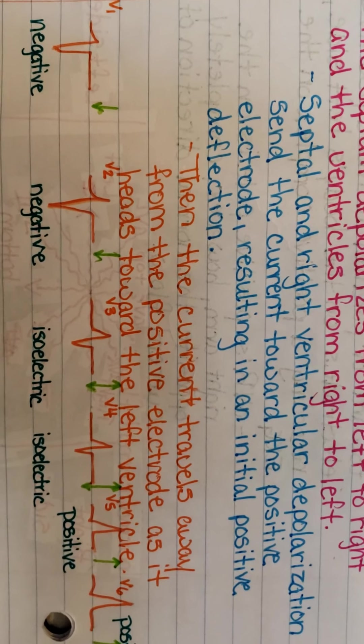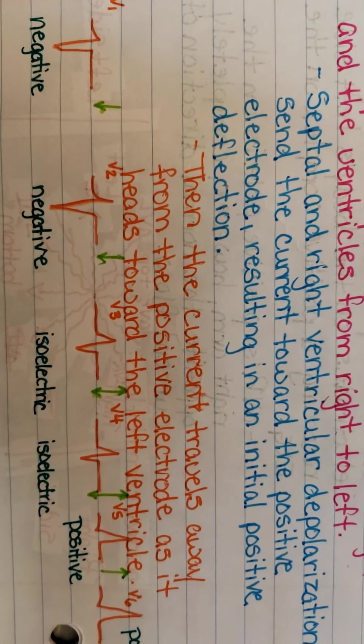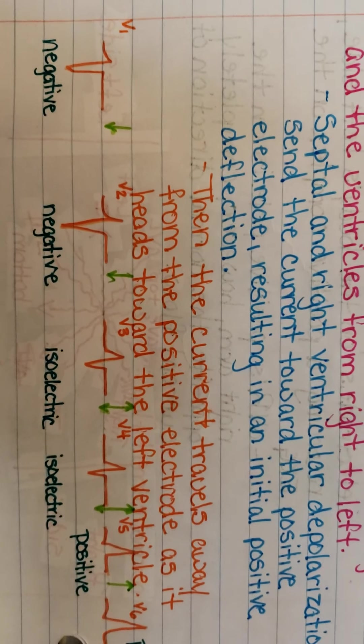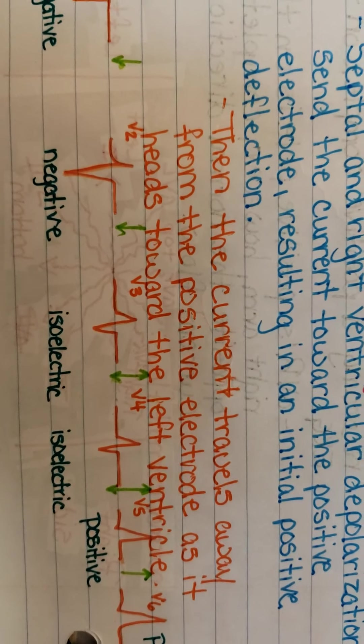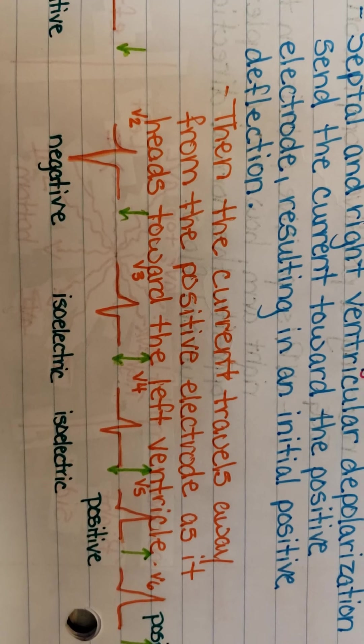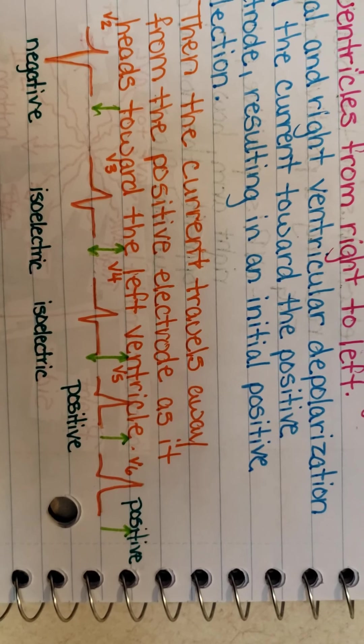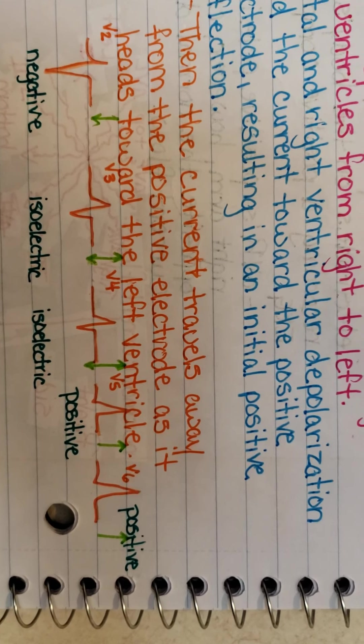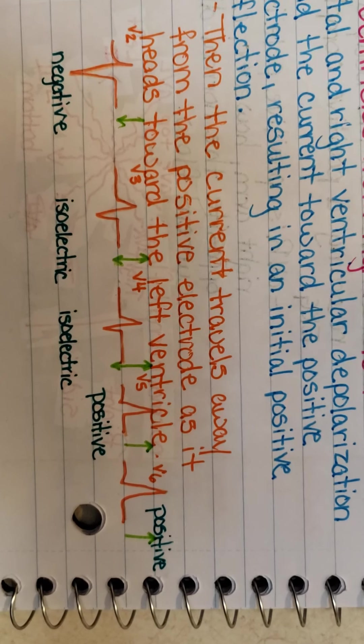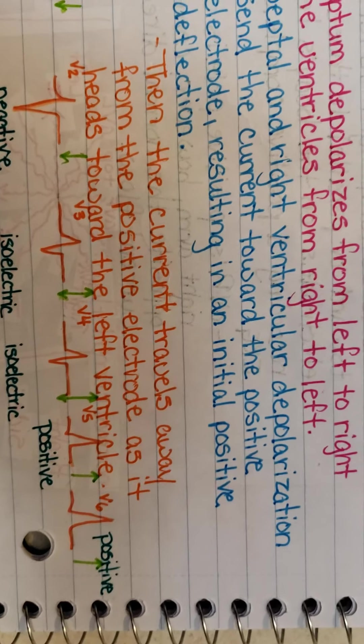Then, V3, V4 is in between. It's neither in a negative pole or a positive pole, which writes an isoelectric EKG. And then, V5, V6 are going toward a positive pole, therefore it writes a positive QRS.